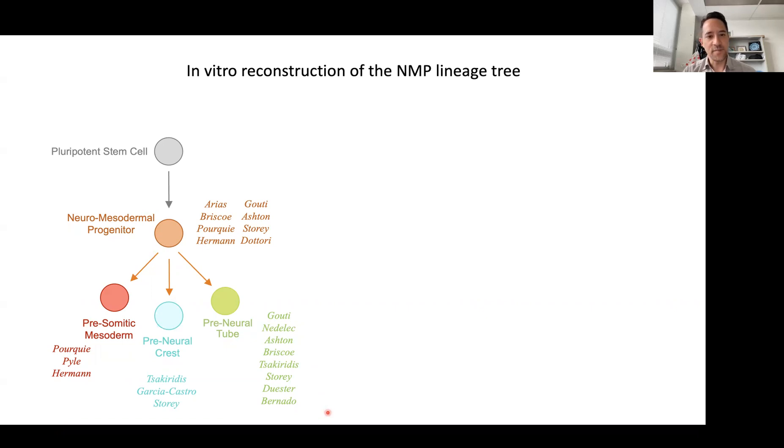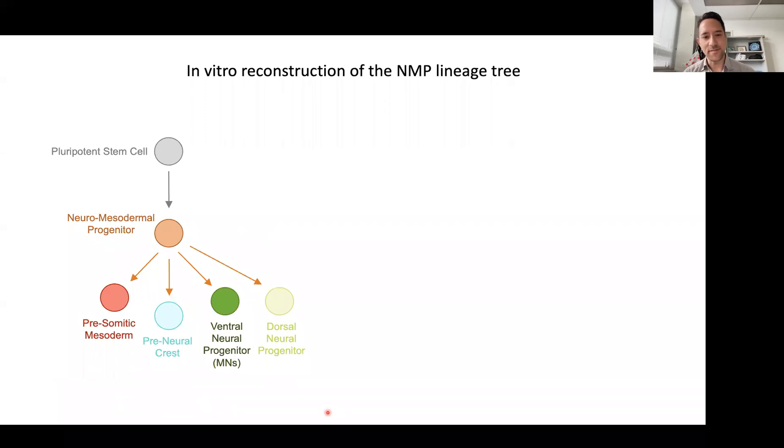This became my task. Because Eva's lab is interested in ALS, we had a particular interest in patterning neural progenitors to be either from the ventral neural tube, which would contain the motor neural progenitors, as well as the dorsal neural progenitors.